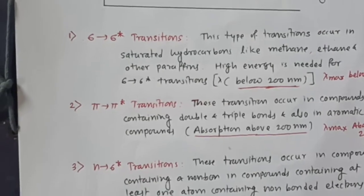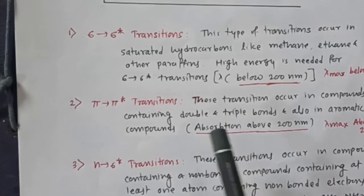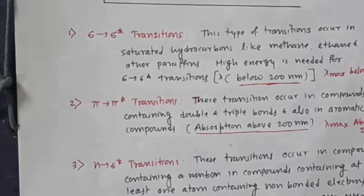The second type of transition is pi to pi star. These transitions normally occur in compounds containing double or triple bonds and also in aromatic compounds like benzene, ethylene, propylene, etc. Absorption will be above 200 nanometers. Whenever an aromatic compound is present and you have a UV spectrum of that compound, it will show absorption above 200 nanometers. So whenever there is absorption above 200 nanometers, we can say that a multiple bond — double, triple, or aromatic — may be present in the molecule.